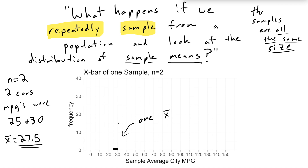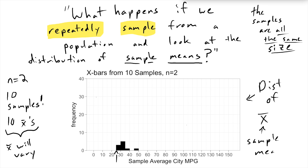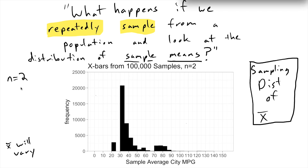This isn't super interesting. Let's increase the number of samples we're taking. We're taking 10 samples now, so we're going to have 10 x-bars. These x-bars are going to vary. Let's jack up the number of samples further — let's say 100 samples, so we're going to have 100 x-bars. You can see that these frequencies are going up because we're taking more samples. Here we're looking at the distribution of 100,000 different sample means that all came from samples of size 2.